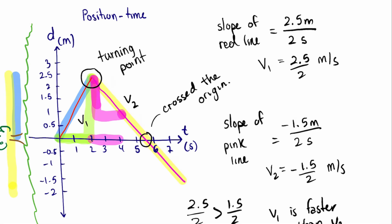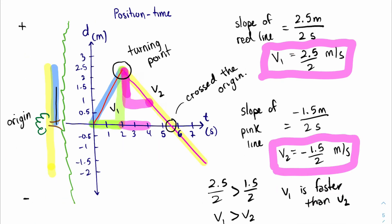But we can do better than this because we also notice that for v1 it was a positive number and v2 is a negative number. What does that indicate? Well, if we go back to where we started, for v1 the motion was to the right, which was positive. And for v2 the motion was to the left, which we call negative.